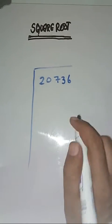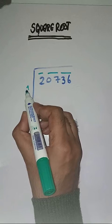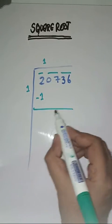So we start with one. One ones are one. Next pair, 07 is coming, we'll take it here. We do one plus one which equals two.